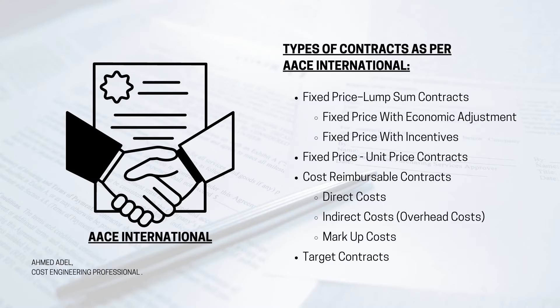A lump sum contract is one where we have drawings, specifications, and a bill of quantities, and the scope of work is very well defined. Someone can price the project and the agreement is made for that price — for example, 40 million to construct a building as per the drawings and specifications. As long as there are no changes to the scope, the contract price never changes.